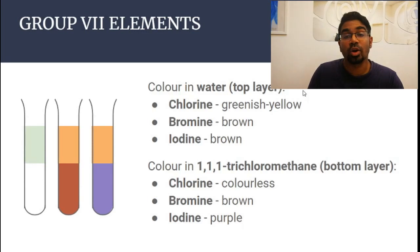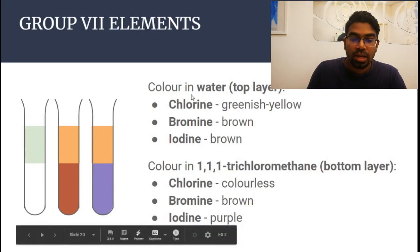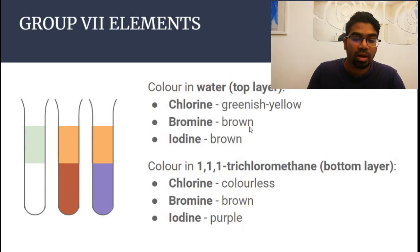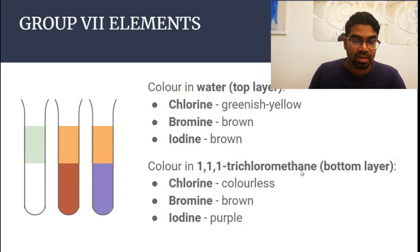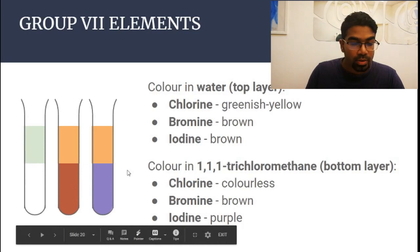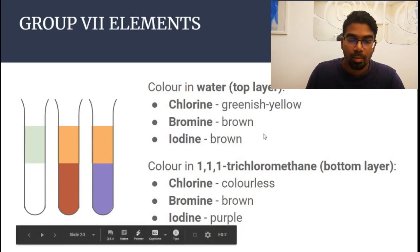Looking at the color of group 17 elements in water versus in an organic solvent such as 1,1,1-trichloromethane — with trichloromethane as the bottom layer and water as the top layer. In water: chlorine gives a greenish-yellow solution; bromine and iodine both form brown solutions. In 1,1,1-trichloromethane: chlorine is colorless (very pale), bromine is brown, and iodine is purple. Note that bromine appears brown in both water and trichloromethane.